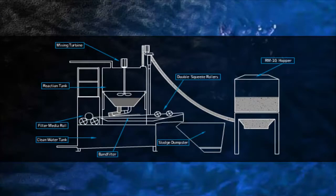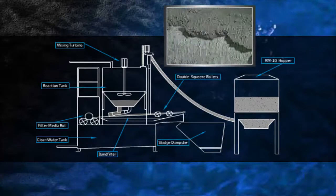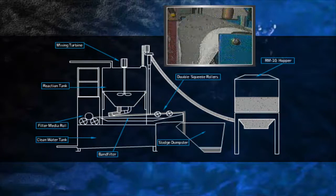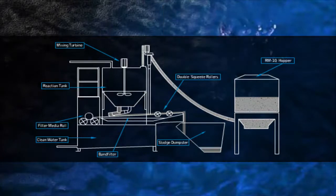The sludge falls onto the filter media where it de-waters by gravity to approximately 25% solids. The solids-laden filter media then passes under rollers that squeeze out any excess water. Both the solids and the filter media fall into the sludge hopper and are disposed of.